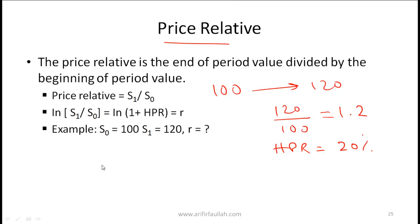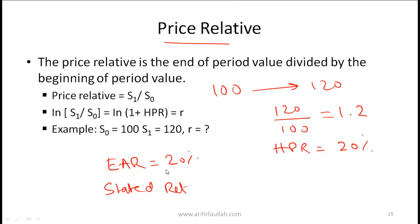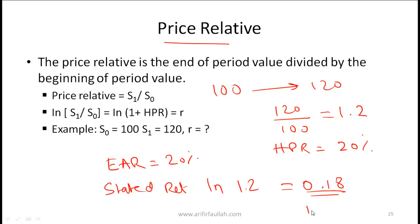If the effective annual return is 20%, what is the stated return assuming continuous compounding? You simply calculate the natural log of 1.2. Using a calculator, ln of 1.2 equals 0.18, so the stated continuously compounded return is 18%.